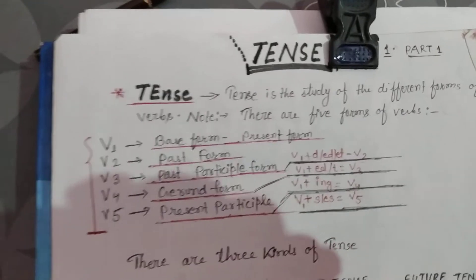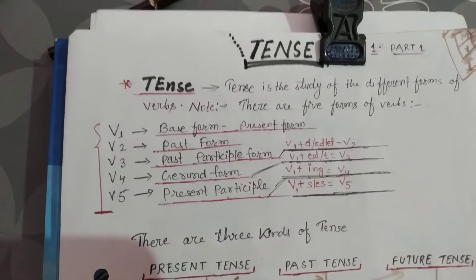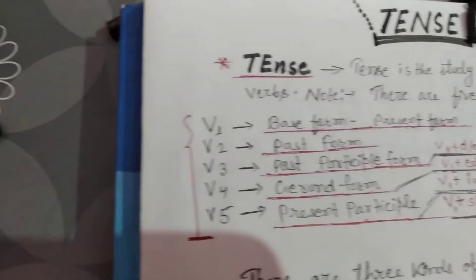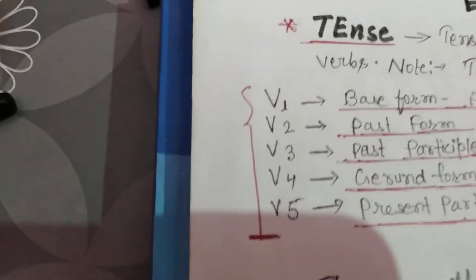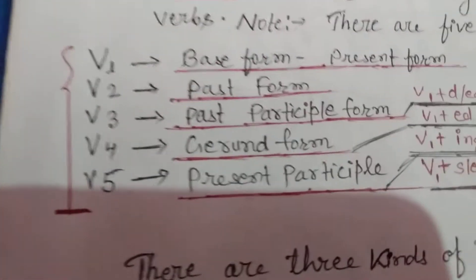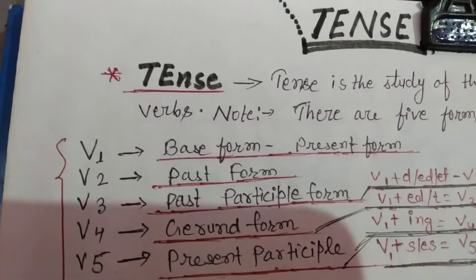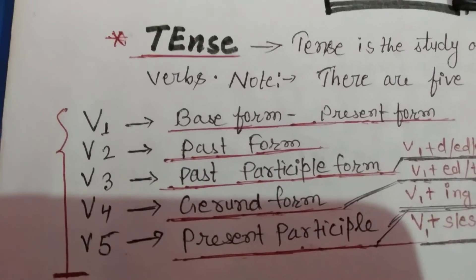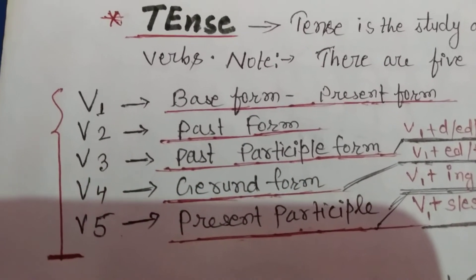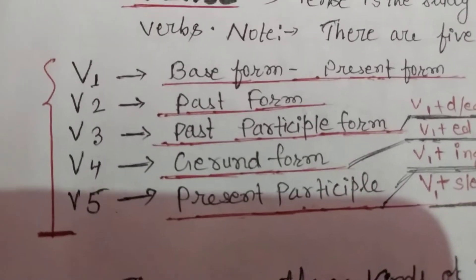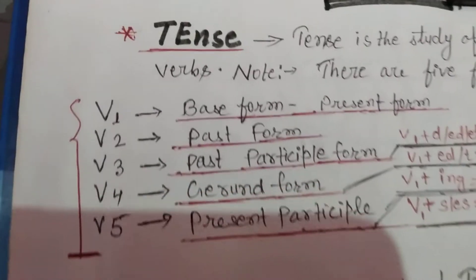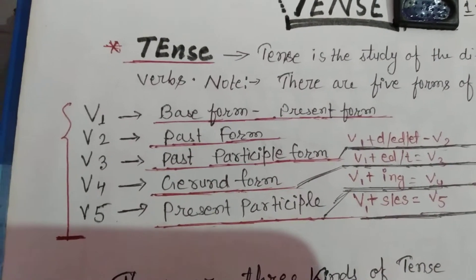There are five forms of a verb: V1, V2, V3, V4, and V5. V1 is called the base form or present form. V2 is called the past form. V3 is known as the past participle form. V4 is known as the gerund form, and V5 is known as the present participle form.